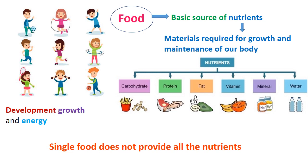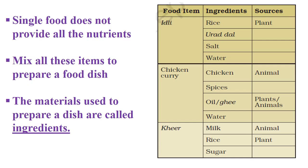A single food does not provide all the nutrients. That's why we mix all these items to prepare a food dish. The materials used to prepare such dishes are called ingredients.